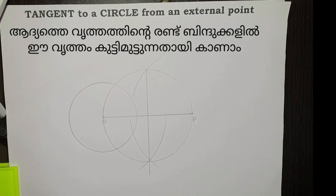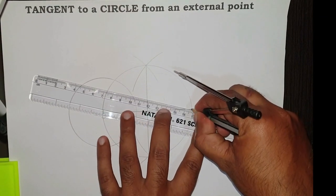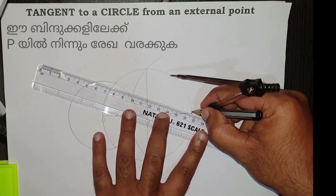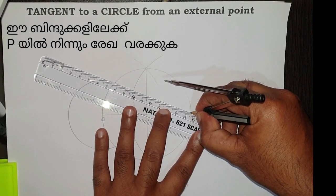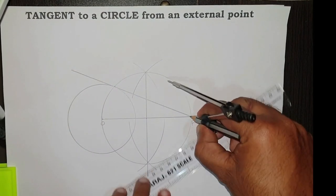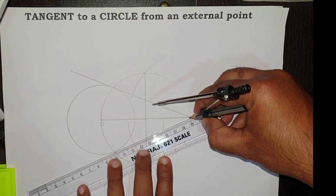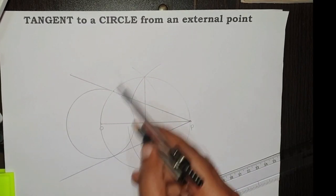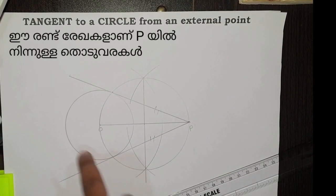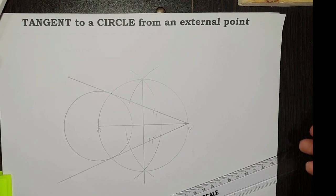Now draw a line from P to the intersecting point. Similarly, these two lines are the tangents of the circle from an external point P. Okay.